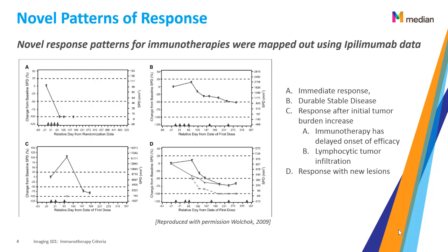In C, you can see that with treatment, there was a sharp increase in the tumor size, followed by a tumor size decrease. This is delayed response, which is quite common in immunotherapy. The sharp increase in tumor size is called a flare, or pseudo-progression.